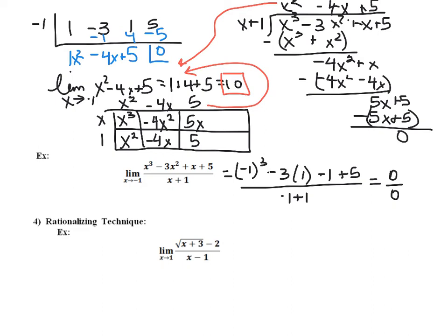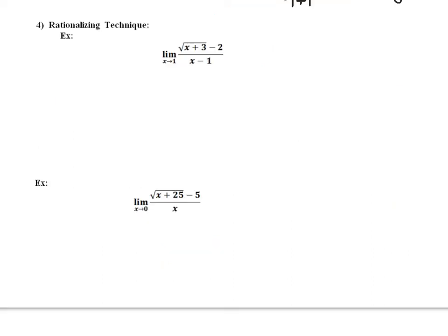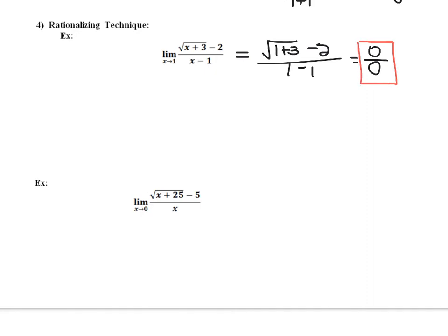My next method for solving for a limit is the rationalizing technique. You should have also seen this in pre-calculus. Let's do our direct substitution first — substituting 1 in for x, I'm getting the square root of 1 plus 3 minus 2, divided by 1 minus 1. The square root of 4 is 2, 2 minus 2 is 0, and 1 minus 1 is also 0. So when I get this indeterminate form, I've got to rewrite this so that I can find a function that matches at all but one point — the one point where they won't match is at 1.